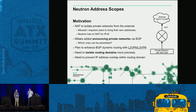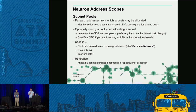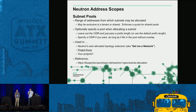So we need a model to isolate routing domains more precisely and prevent address overlap within a routing domain. We started adding this feature well over a year ago. Subnet pools, which are part of this feature, have been in Neutron since the Kilo release and haven't changed much since then.